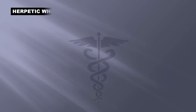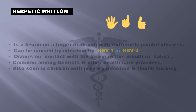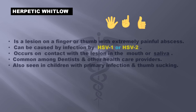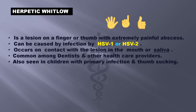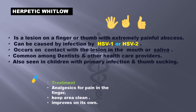Lastly, a lesion common in both primary and secondary infection is the herpetic whitlow. It is a lesion on a finger or thumb with extremely painful blisters. It occurs through contact with a lesion in the mouth or saliva, and is common among dentists and other healthcare providers. It is also seen in children with primary infection who have the habit of thumb sucking. Treatment is analgesics for pain, and it is important to keep the area clean so that it can improve on its own.